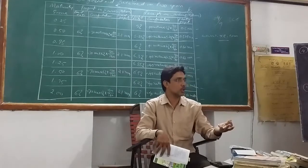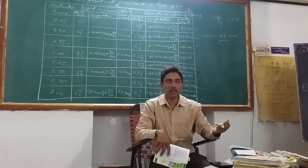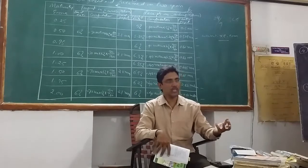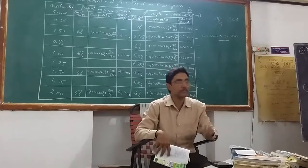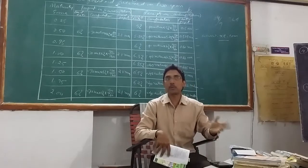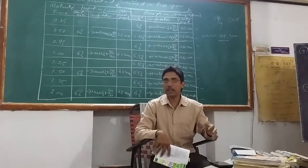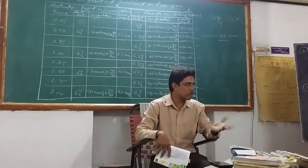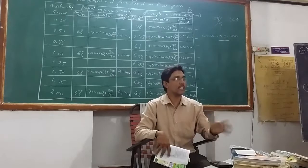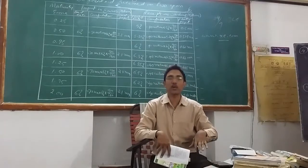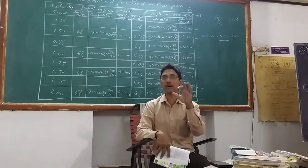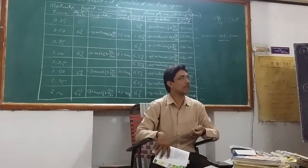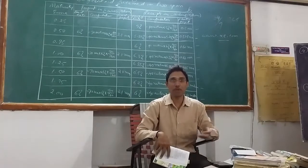Income: first one is Interest Earned, Schedule 13. Other Income, Schedule 14. Interest earned plus other income gives you total income. Then expenditure will start. Among the expenditure, Schedule 15 is Interest Expended, Schedule 16 is Operating Expenses, then Provisions and Contingencies with no schedule number. Adding three items you will get total expenditure. Total income minus total expenses, the result is termed as profit for the current year.